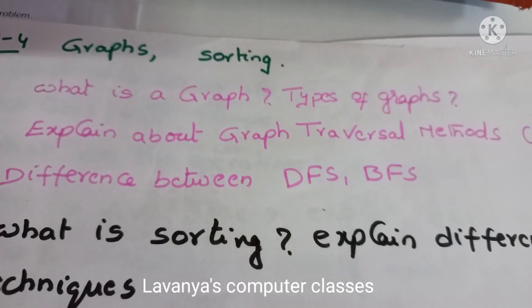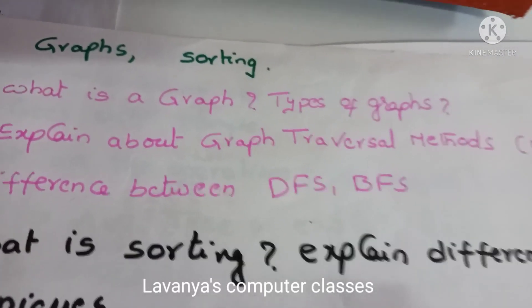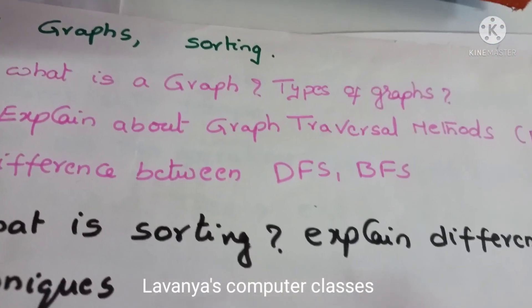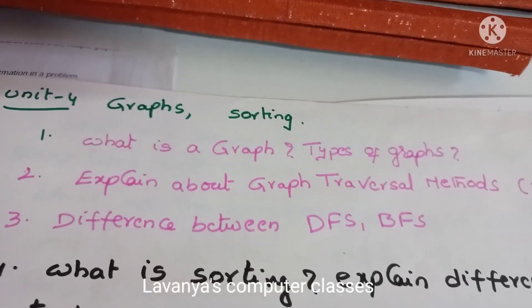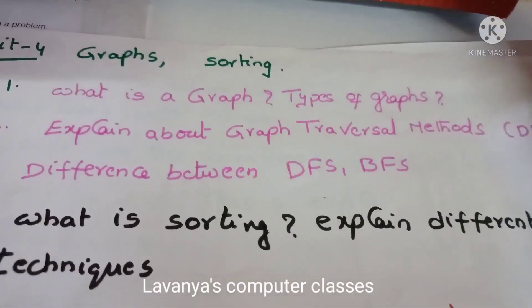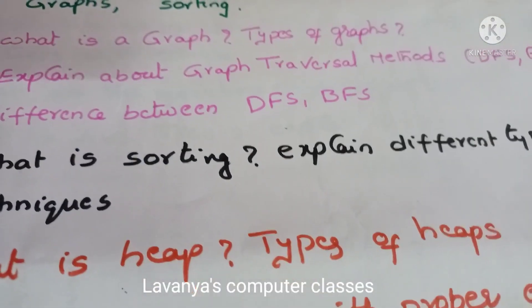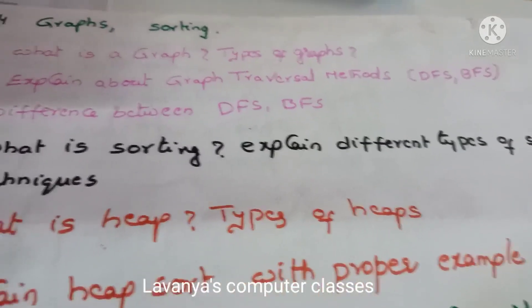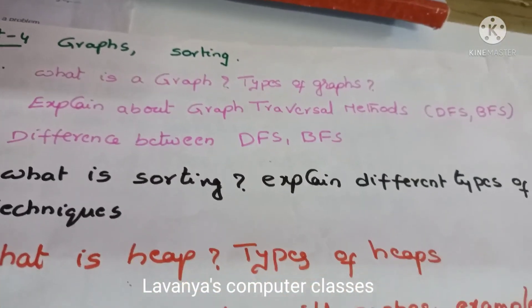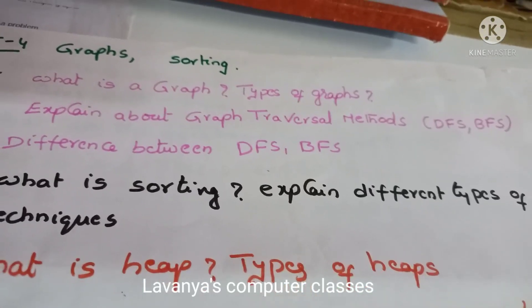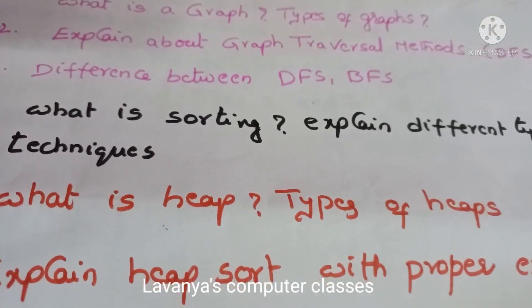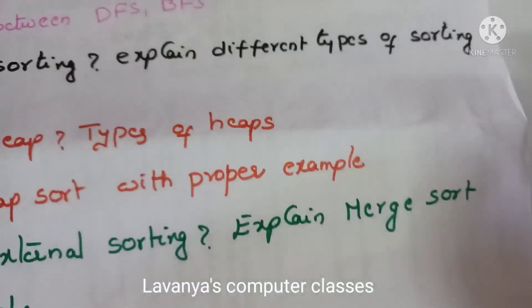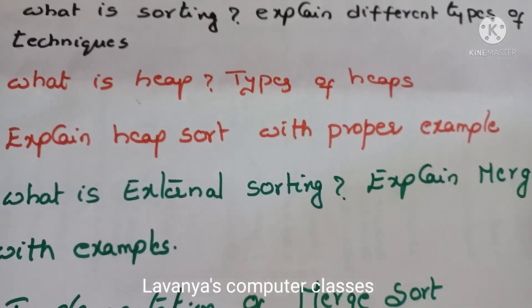First we concentrate on graphs — these are very easy topics, so prepare well for this unit. What is a graph and types of graphs? Write the definition of graph and what are the types of graphs. Then what are the graph traversal techniques — explain about graph traversal methods, BFS and DFS. Then the difference between BFS and DFS — that is a very important question. Next chapter: what is sorting and what are the different types of sorting techniques? Internal sorting and external sorting.